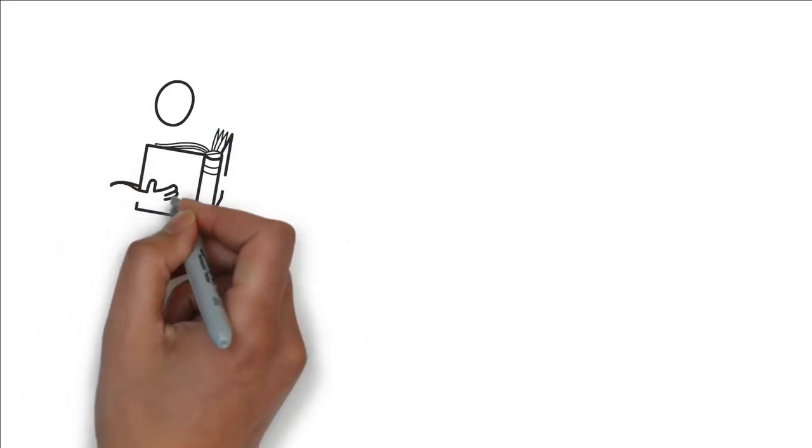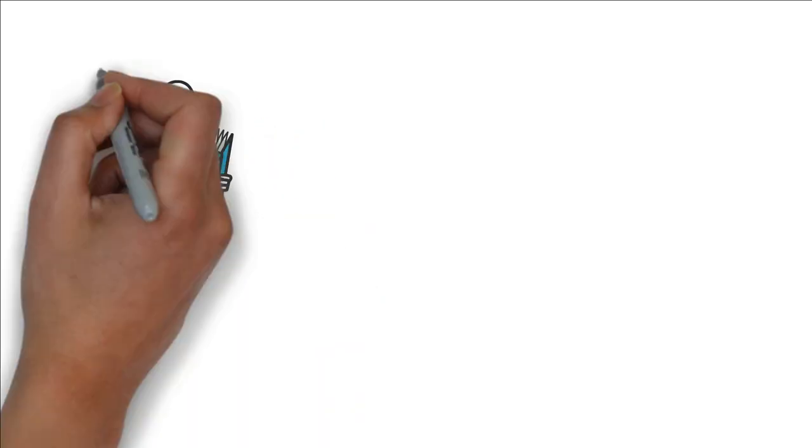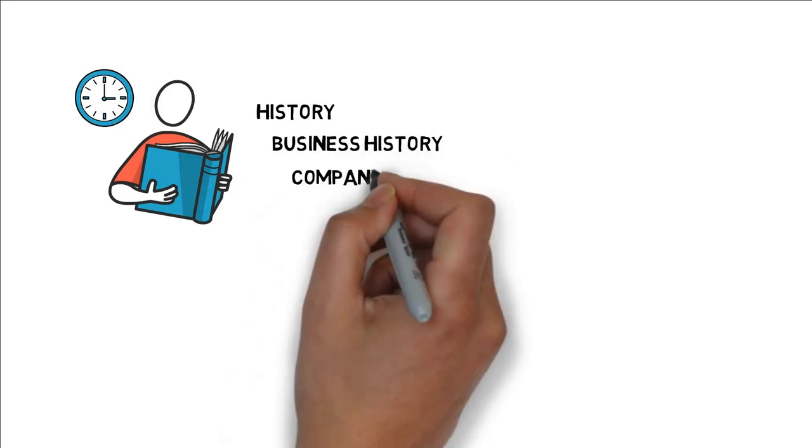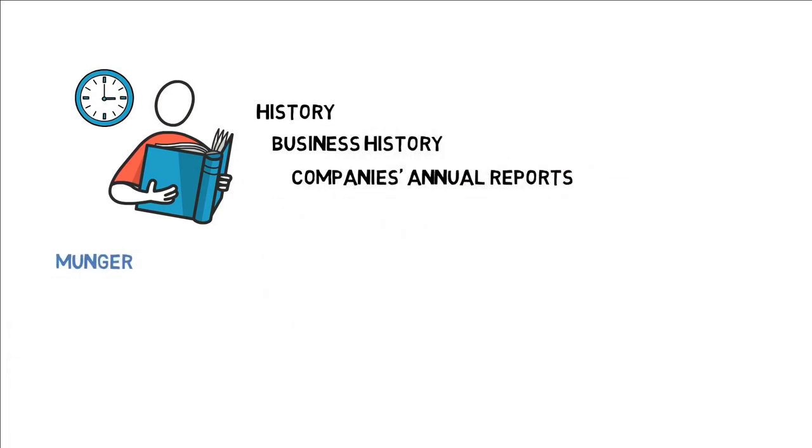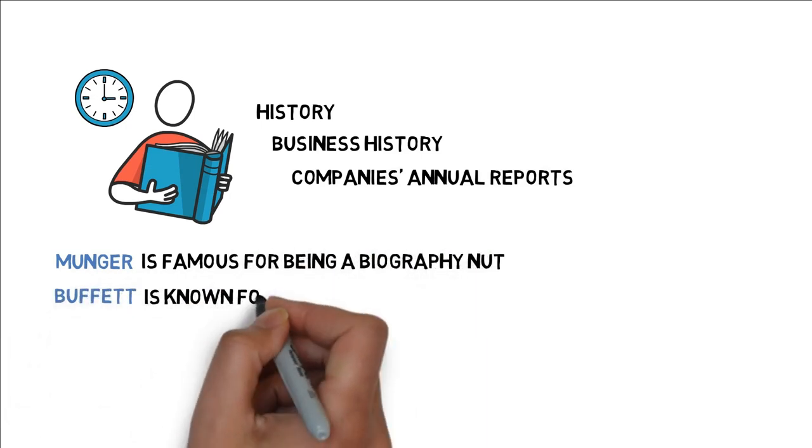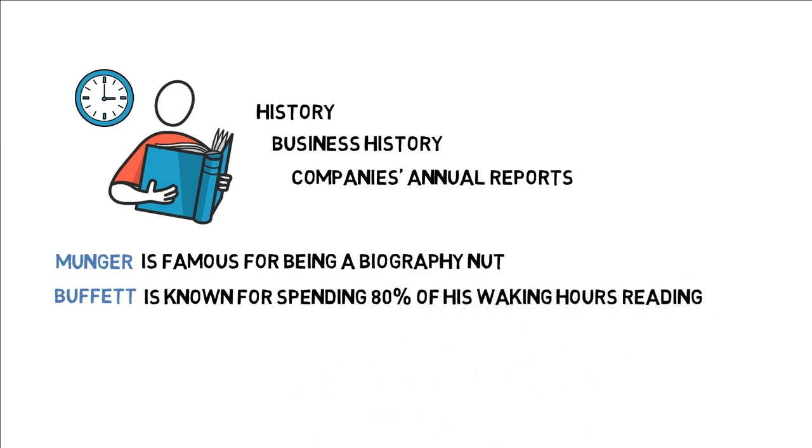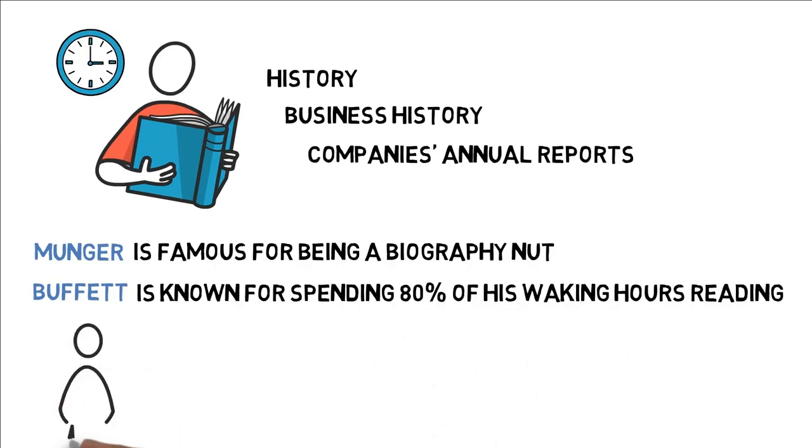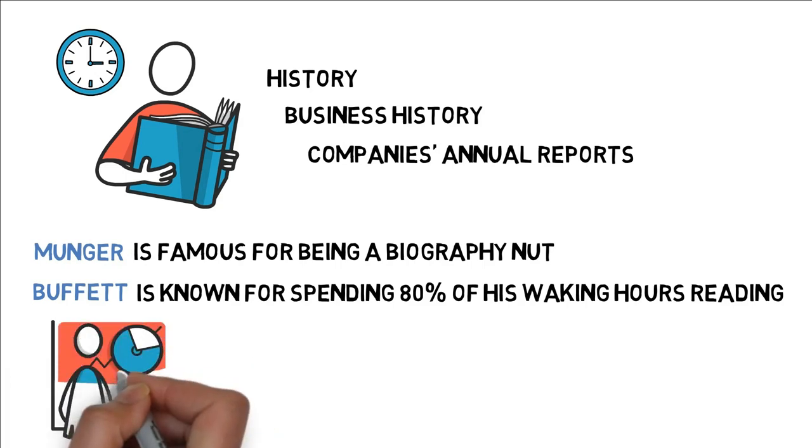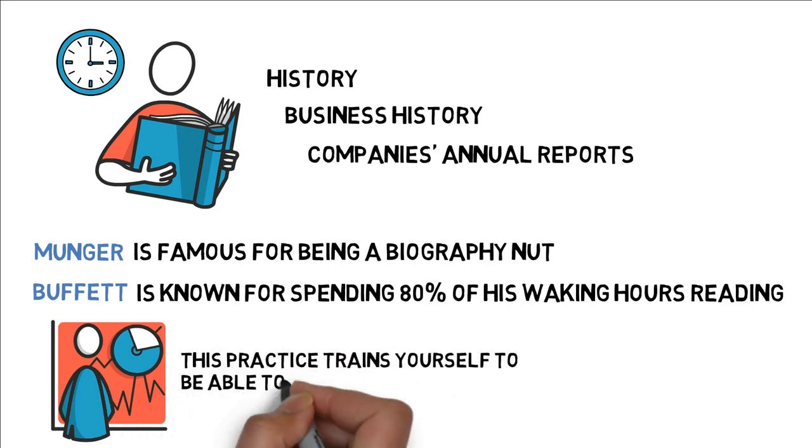Leeloo also said that a large part of value investors' time should be spent reading. Reading should consist of everything and anything, but especially history, business history, and companies' annual reports. Munger is famous for being a biography nut, and Buffett is known for spending 80% of his waking hours reading. By doing a vast amount of reading, research, and analysis, you can better understand the success of past predictions. This practice trains yourself to be able to sniff good investments, helping value investors make more educated predictions in the future.